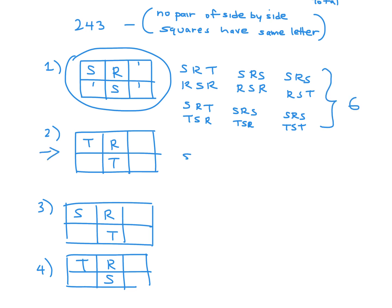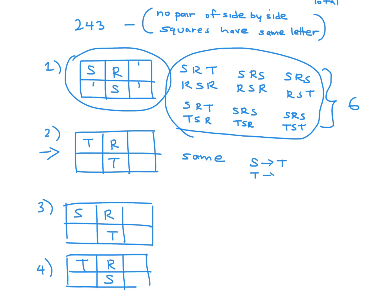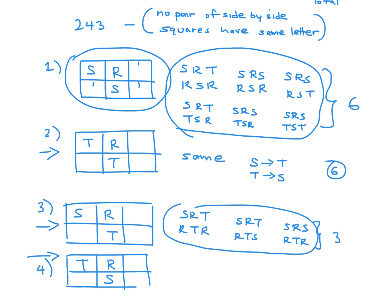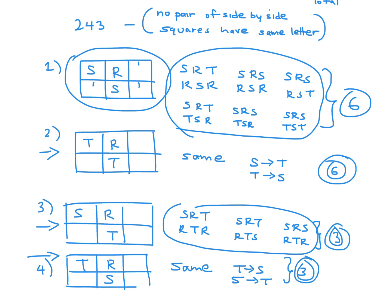For the other cases, wherever there's a T you change it to S and vice versa, giving another 3, so the grand total of no-matching-adjacent-pair arrangements is 6 plus 6 plus 3 plus 3, which is 18. Since 18 is the complement, we take 243 minus 18 to get 225, which is the answer.